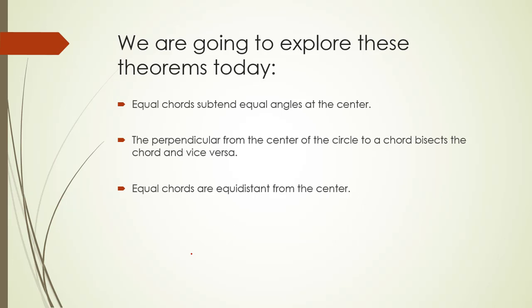The theorems that we are going to learn today are: equal chords subtend equal angles at the center; the perpendicular from the center of the circle to a chord bisects the chord and vice versa; and equal chords are equidistant from the center.